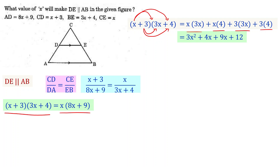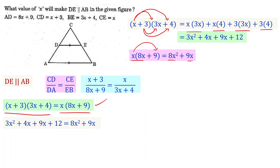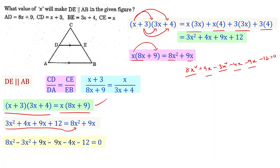The right hand side: x times (8x+9) equals 8x squared plus 9x. Substituting into the equation: 3x squared plus 4x plus 9x plus 12 equals 8x squared plus 9x. Taking all terms to one side: 8x squared minus 3x squared plus 9x minus 9x minus 4x minus 12 equals 0.